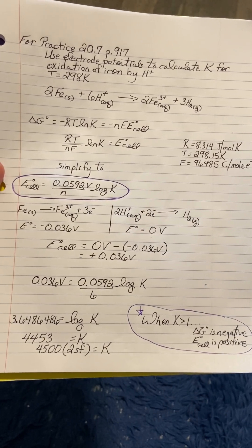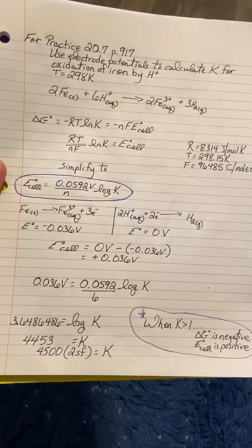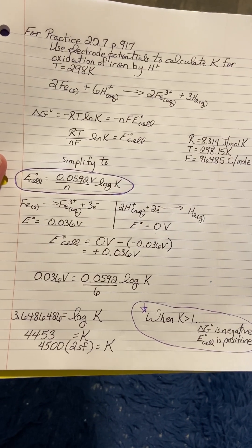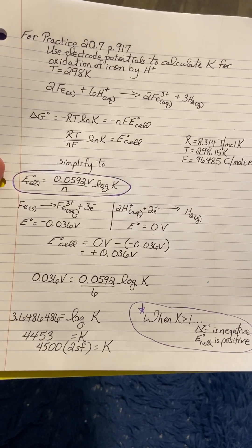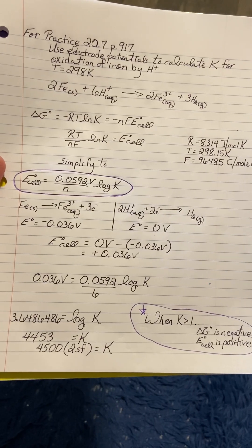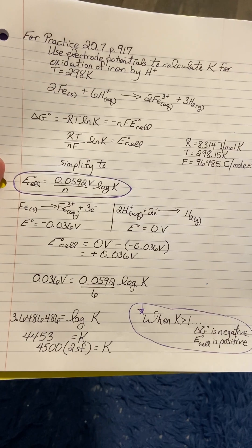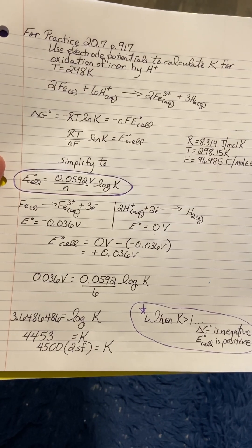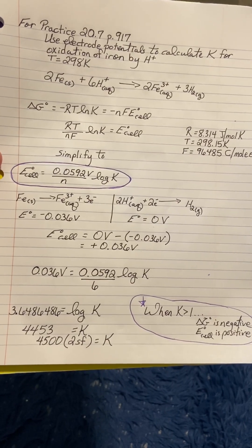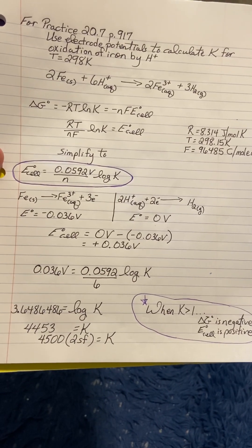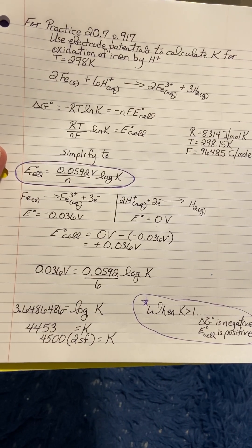We can substitute that in: 0.036 volts equals 0.0592 divided by 6 times log of K. Remember that 6 is the moles of electrons coming through this process. One of our half reactions has three, one has two moles of electrons, the common multiple is six. We solve for log of K and then isolate K, and we get 4453. If we round to two sig figs it'd be 4500 for our equilibrium constant value.